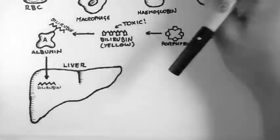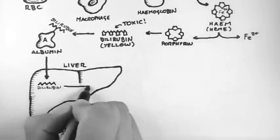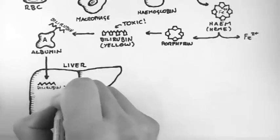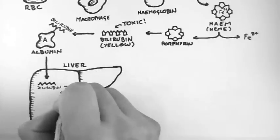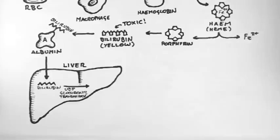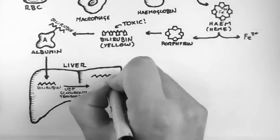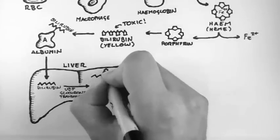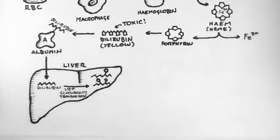Once inside the liver, an enzyme called UDP-glucuronyltransferase attaches glucuronic acid to the bilirubin. In this way it makes bilirubin less toxic and more water soluble.